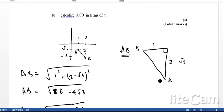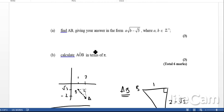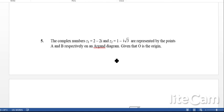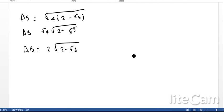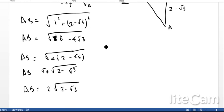I think the easiest way to tackle this question is to have a sketch and then take it from there. The next part of the question is probably easiest in terms of a sketch: calculate AOB in terms of π. I'll probably start with this sketch here.